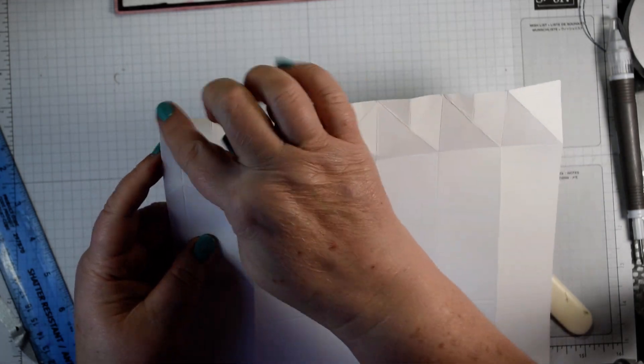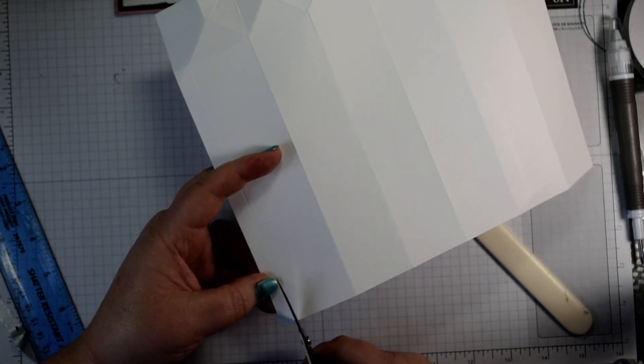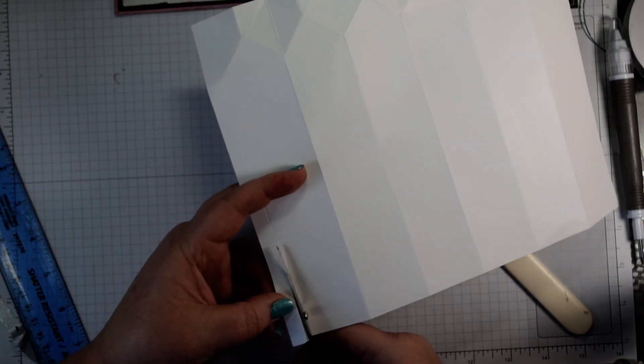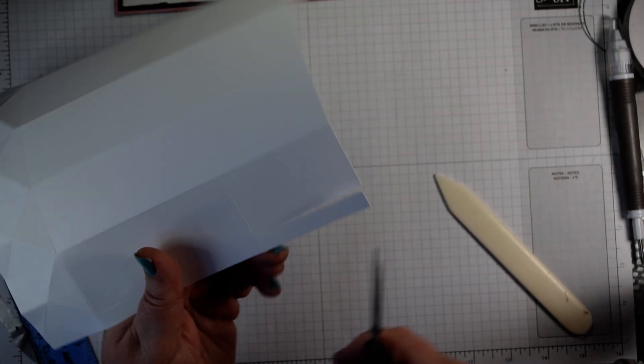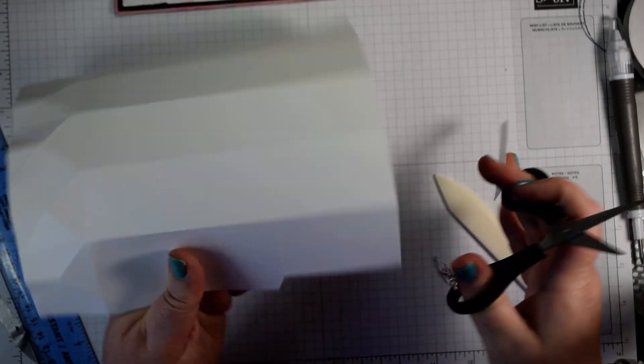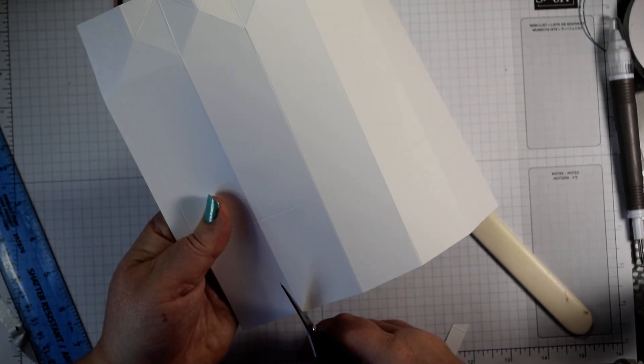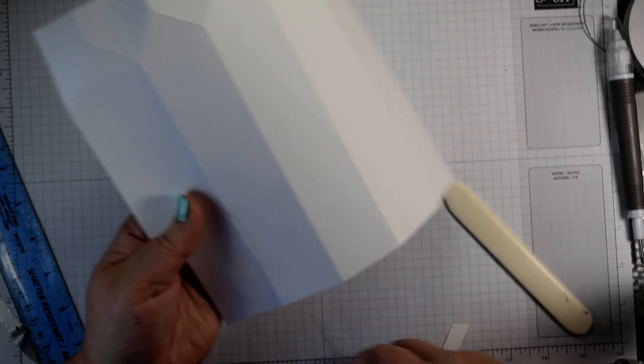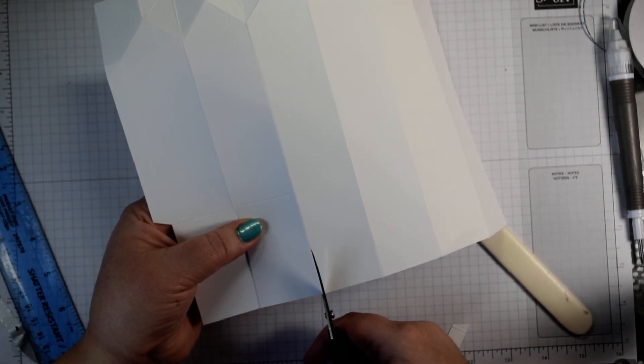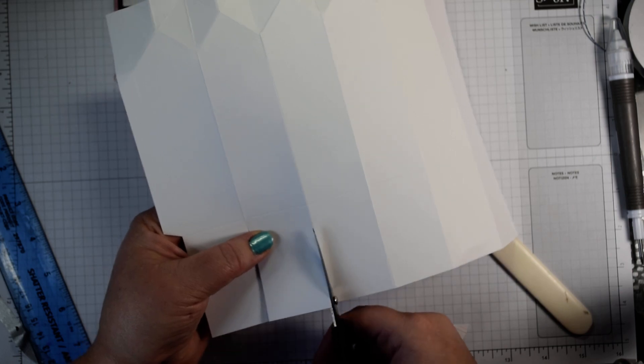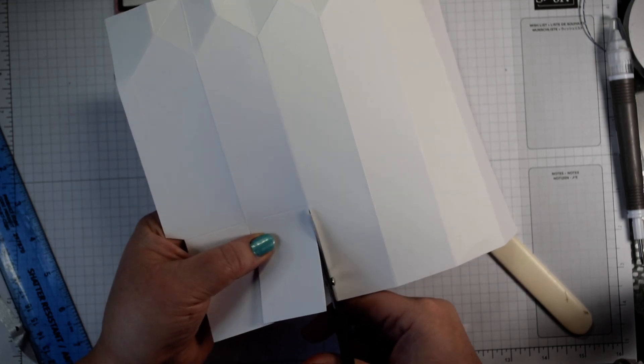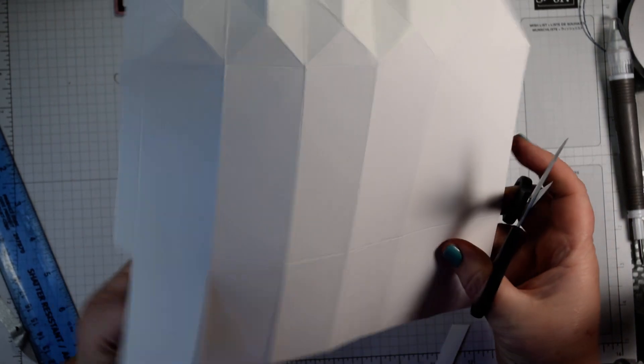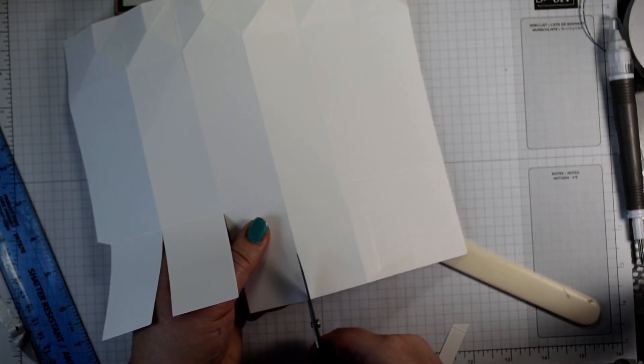Now, you're not trimming anything off the top here. We are going to trim on the bottom here. But with all of these, apart from this one end skinny piece, I'm just cutting straight up. Because you want to use those straight lines to help line up your overlapping at the bottom of the box.